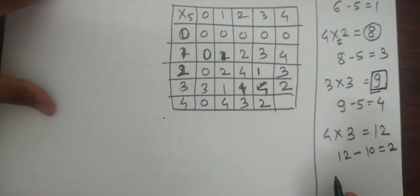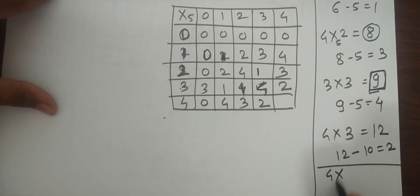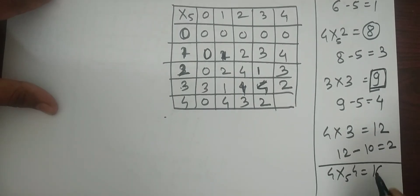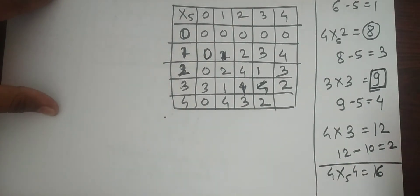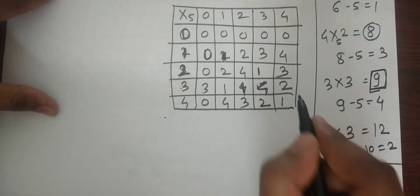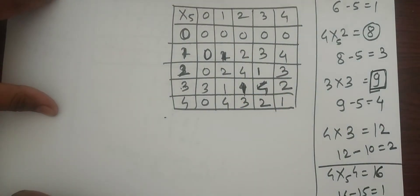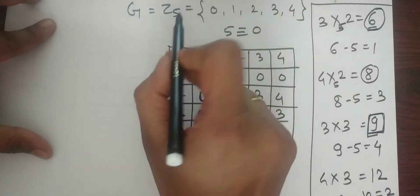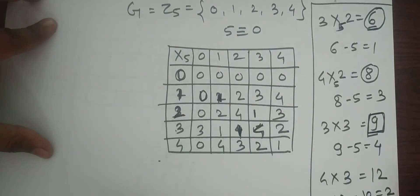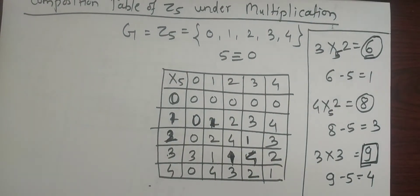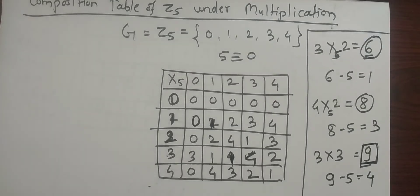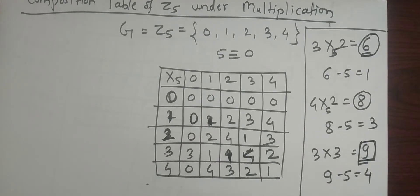Finally, 4×4=16. The nearest multiple of 5 is 15, so 16 minus 15 is 1. Write 1 here. So this is the composition table of Z5 under multiplication. This table is not helpful to verify the associativity property, but from this table we can identify the identity element and inverses.